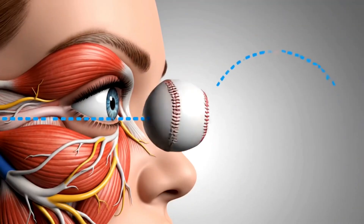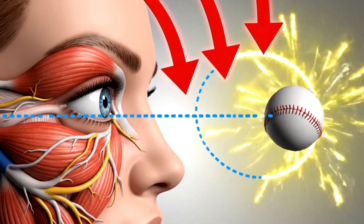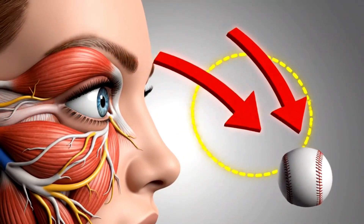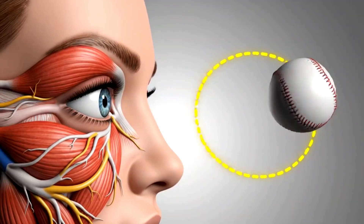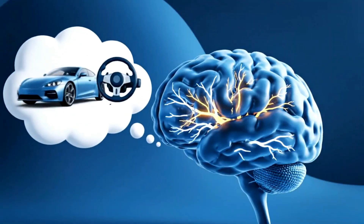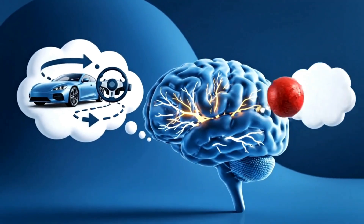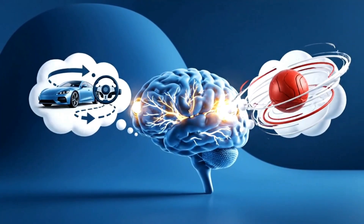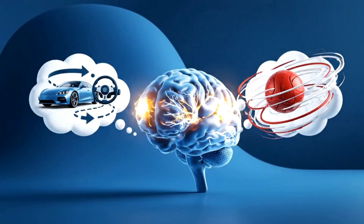This net sideways force continuously acts on the ball, causing it to curve away from its original path. Think of it like steering a car — the pressure difference acts as the rudder, constantly directing its flight path.